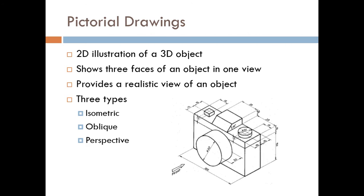Pictorial drawings — it's a type of pictorial drawing — is a 2D illustration of a 3D object. So we're using paper, which is obviously two dimensions. You have length and width on a piece of paper, only two dimensions. Now, we want to represent something that's 3D, such as this camera. And how we're going to do this is through isometric drawings. So we're going to see three faces of an object, such as this camera, all in one view, even though it's drawn on a sheet of paper, which is 2D.